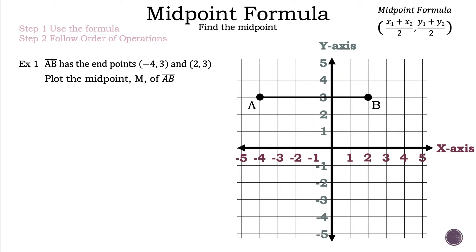Now let's read the question. Segment AB has the endpoints negative 4, 3 and 2, 3. Plot the midpoint M of segment AB.